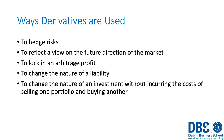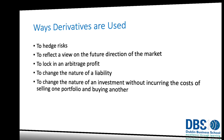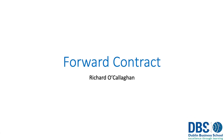The ways derivatives can be used include: to hedge your risk and reduce it when you invest in an asset; to reflect your view of the future direction of the market as an alternative to purchasing the asset itself; to lock in an arbitrage profit; to change the nature of a liability; and to change the nature of an investment without incurring the cost of selling one portfolio and buying another. By purchasing some form of a derivative asset, we can change the nature of the portfolio we're working on.